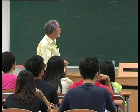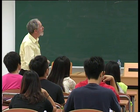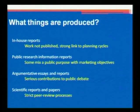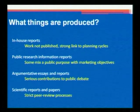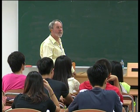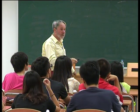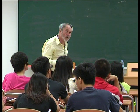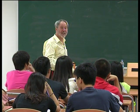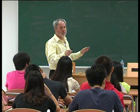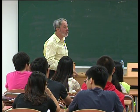The next classification is by what's produced. First, in-house reports which aren't published — that's obvious. Then there are public research information reports, which usually have some mix of public-purpose analysis with marketing objectives. I'll show you an example shortly of a report published on the internet that looks like a research report but is really also being published as part of the company's marketing — they have a point of view in it, and you need to be suspicious of that.